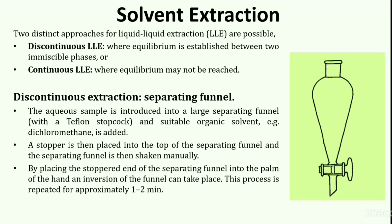In the extraction process, first the aqueous sample — around one liter at a specified pH — is introduced into a large separating funnel of two-liter capacity, and 60 ml of a suitable organic solvent such as dichloromethane can be added. After placing the stopcock, the separating funnel is shaken manually, then inverted upside down approximately five to six times.